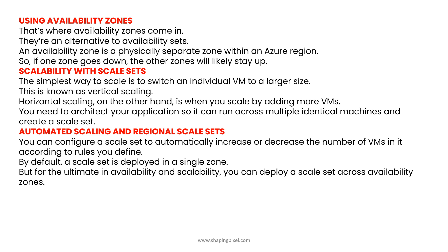Scalability with scale sets. The simplest way to scale is to switch an individual VM to a larger size — this is known as vertical scaling. Horizontal scaling, on the other hand, is when you scale by adding more VMs. You need to architect your application so it can run across multiple identical machines and create a scale set.